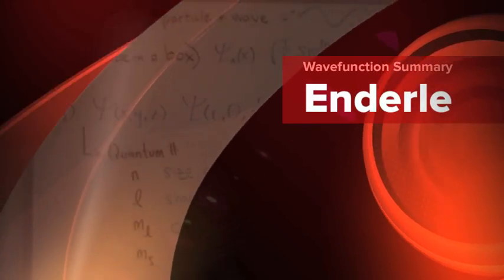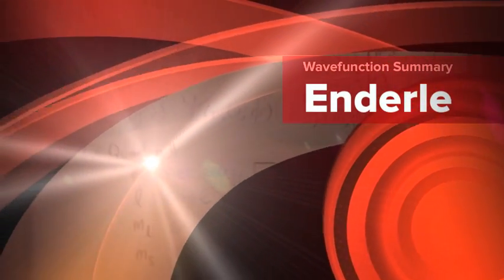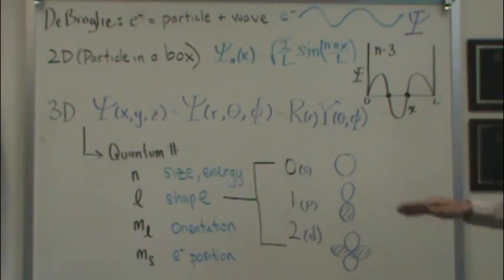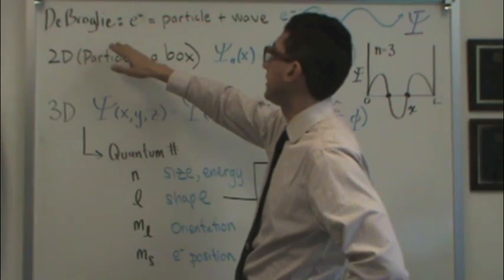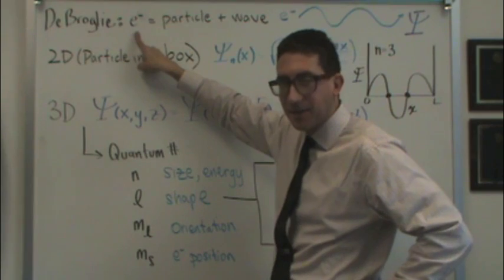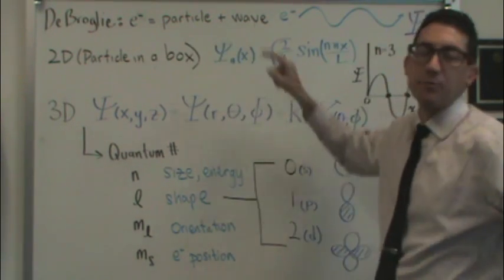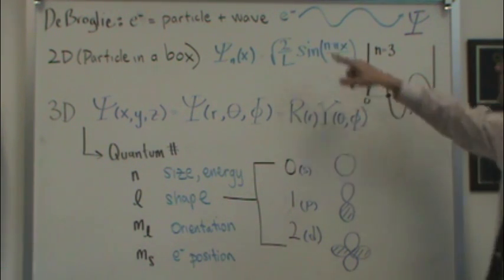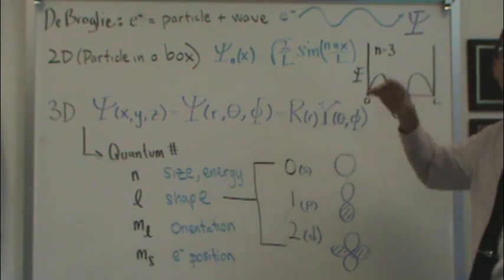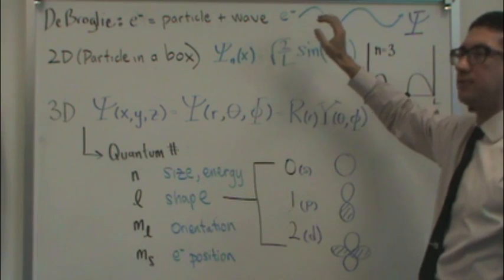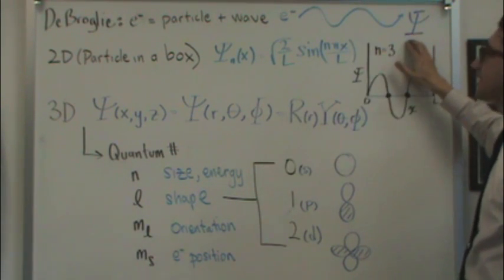So in class, we're covering wave functions, and I wanted to do a little summary for you so you know what's going on. First of all, de Broglie tells us that anything, but we're concerned about an electron, an electron is both a particle and a wave at the same time. And really in this section, we're considering the wave function of a particle. So I just drew some random wave here for an electron, and the function of a wave function we call psi.